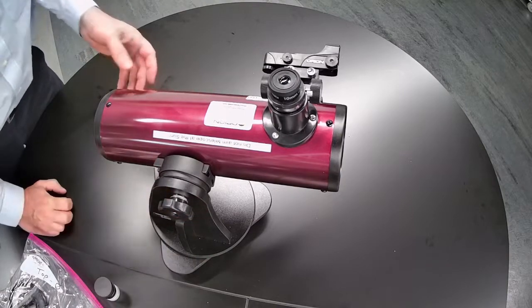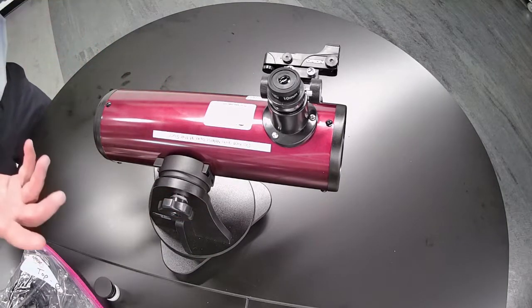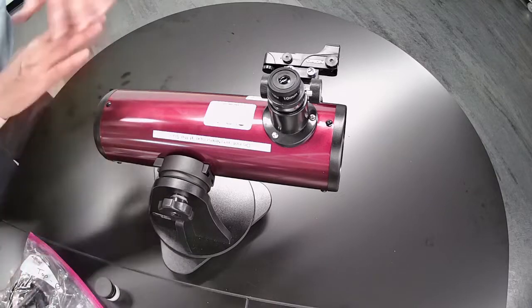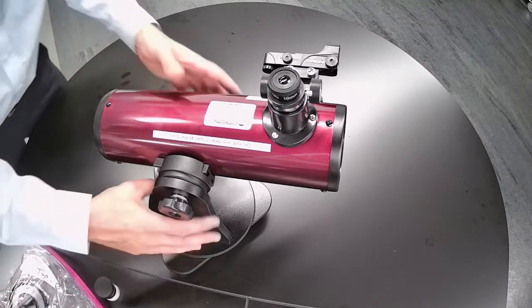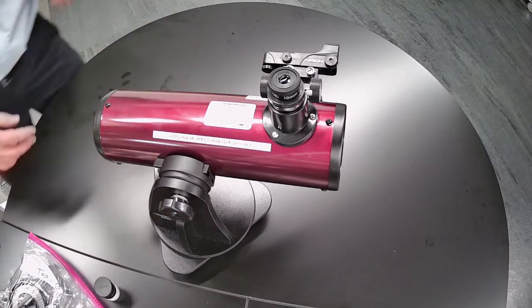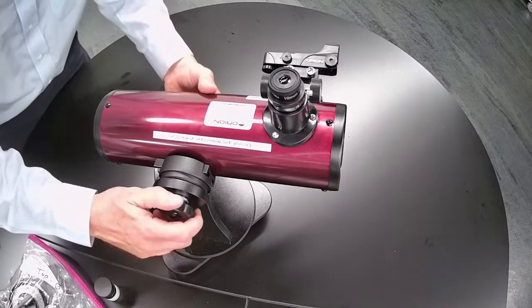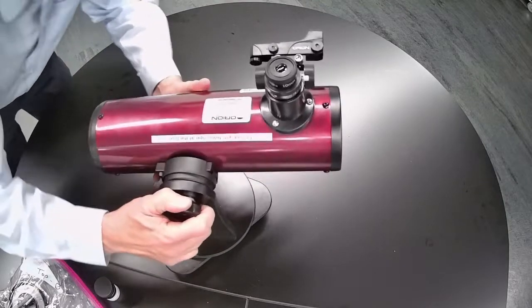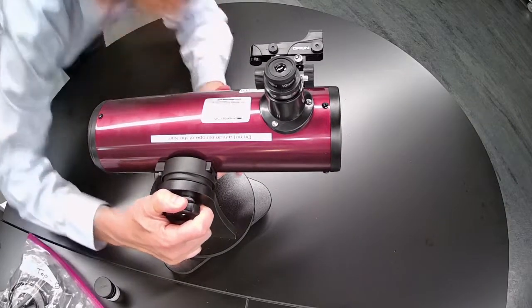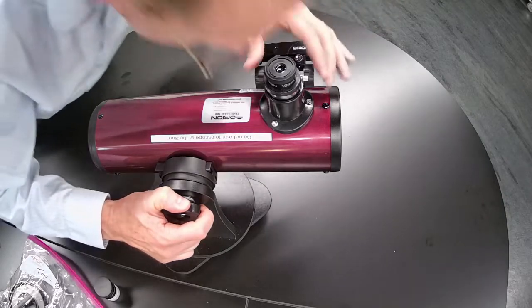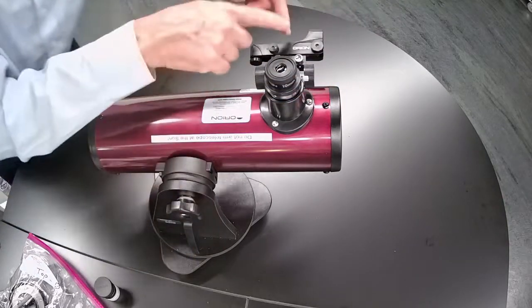You'll want to set this on something sturdy like if you're outside you might find a picnic table or one of those low walls or something that you could set it on, something sturdy so that when you walk around it doesn't shake or vibrate. And now you might find that when you get lined up on something and the red dot's exactly on it and there's nothing in the eyepiece. That means that this red dot finder is misaligned.